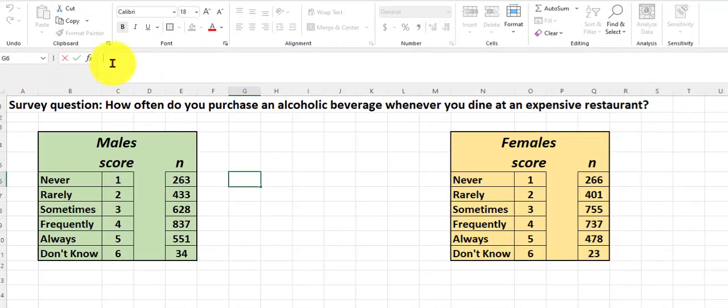I'm going to go to the function bar and hit equals. And I'm going to say, take that cell and then shift 8, which is the asterisk, which is multiply in Excel, times that cell. So if I added up 263 ones, I'd get 263. Now I'm going to multiply each score times their n to get a total number.